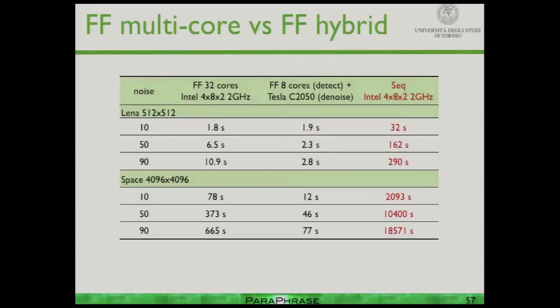Here we also have a pipeline in which the second stage is a CUDA map, and a hybrid version in which the second stage is a farm whose nodes are pipelines, and the second stage of each pipeline is a CUDA map. The key point: the legacy parts of the code — the gray blocks — don't change at all. For the big satellite image, which took five hours in the sequential version, using the hybrid structure we can restore it in a little more than one minute.